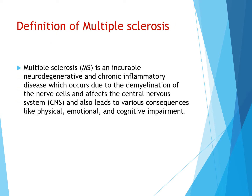First, let us talk about multiple sclerosis. This disease is actually a degeneration of the nerve and a chronic inflammation of the nerves. The disease occurs because of a condition called demyelination of the nerve cells — the myelin covering, the fatty tissue covering over the axons, is damaged or inflamed.